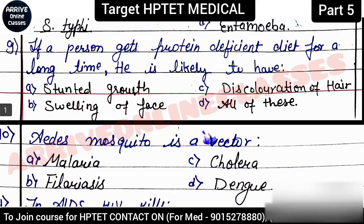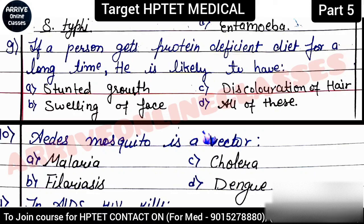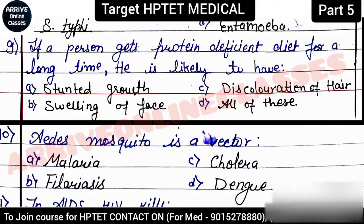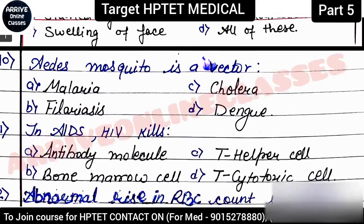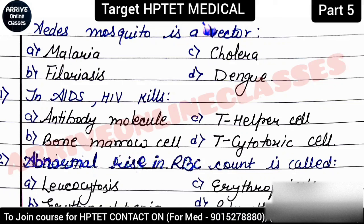Next question: 'If a person gets a protein-deficient diet for a long time, he is likely to have?' The options are stunted growth, swelling of face, discoloration of hair, and all of these. The correct answer is 'all of these' — all these symptoms will be seen in the body when protein is deficient for a long time.